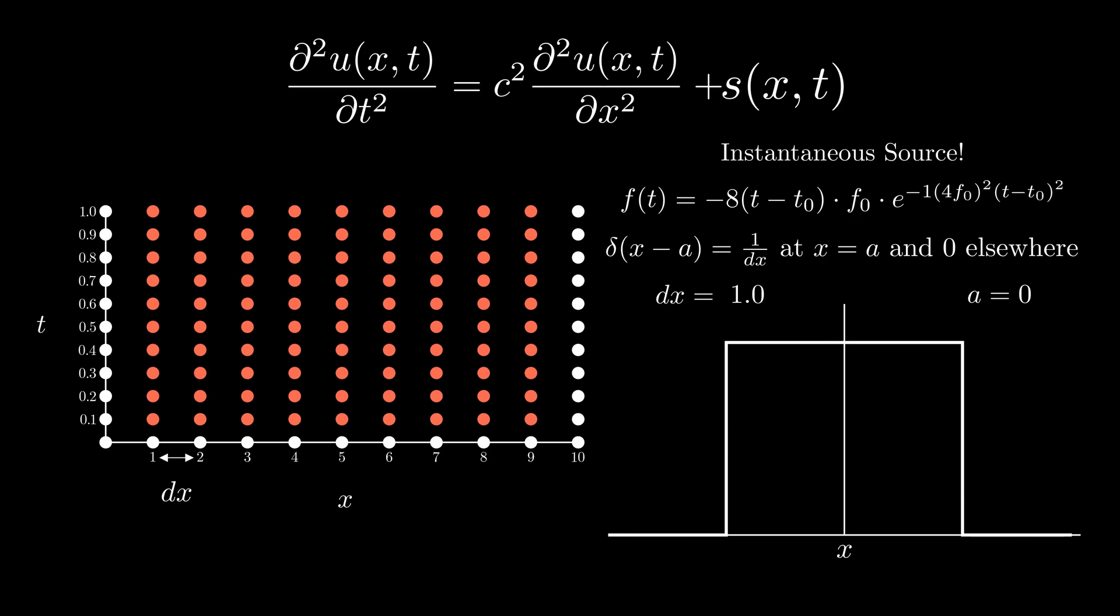Now, as the dx decreases, the source will become more and more localized. This is exactly what I want. Finally, I can get the complete definition of source function by multiplying the two together.